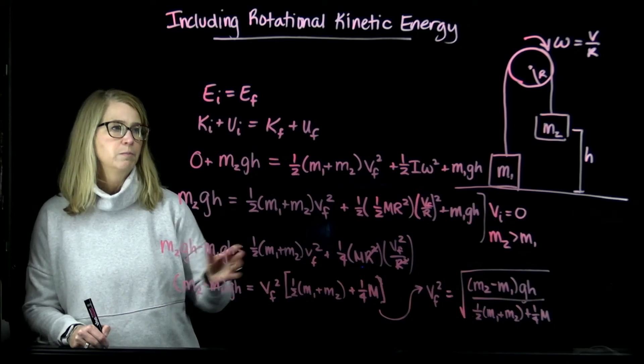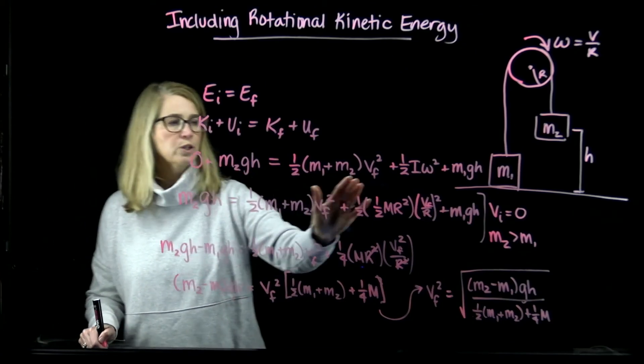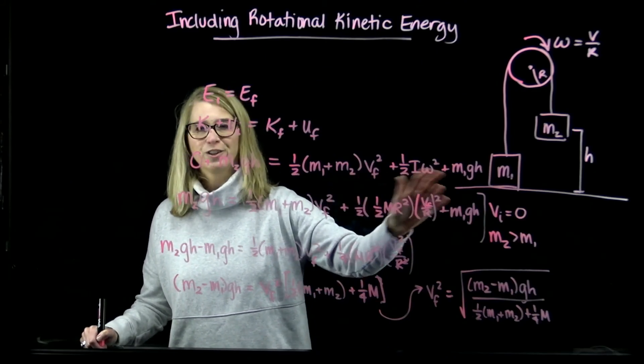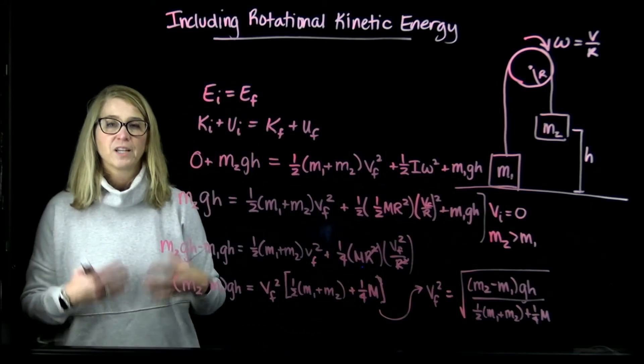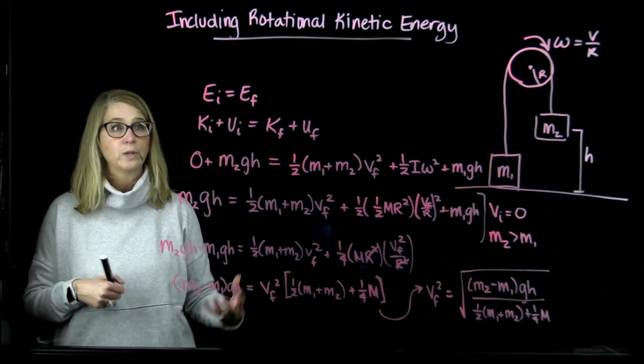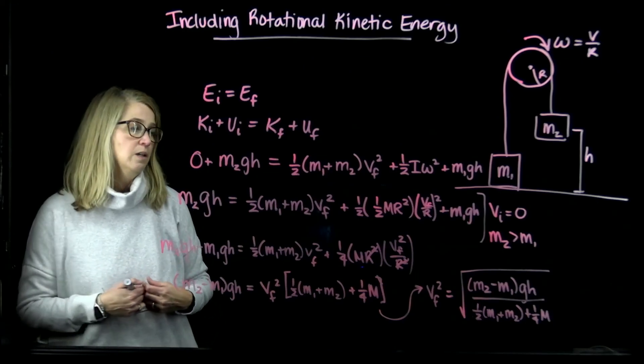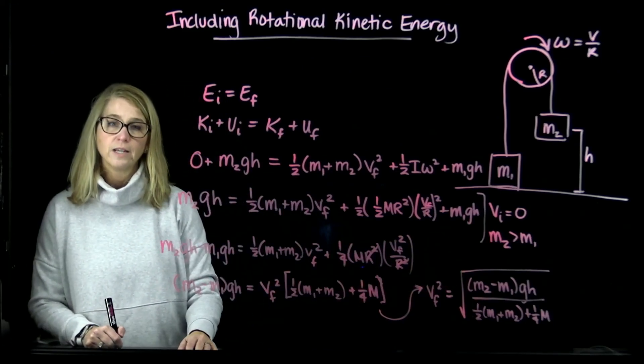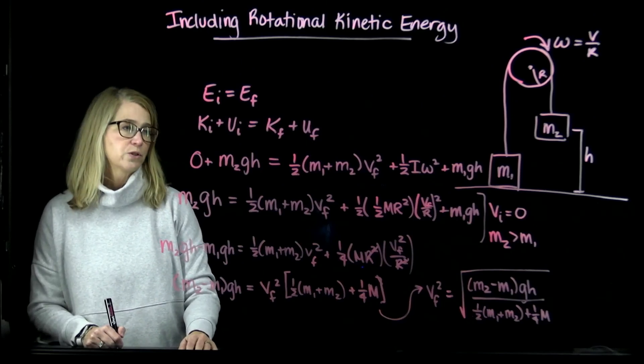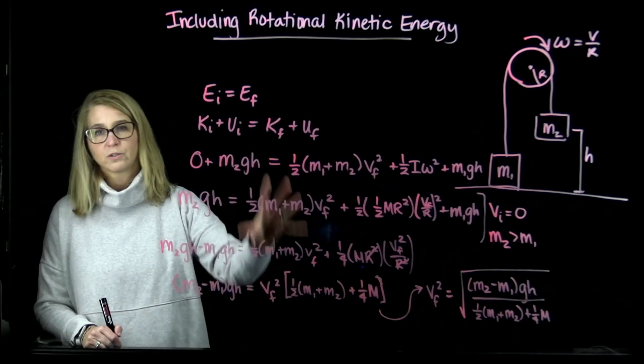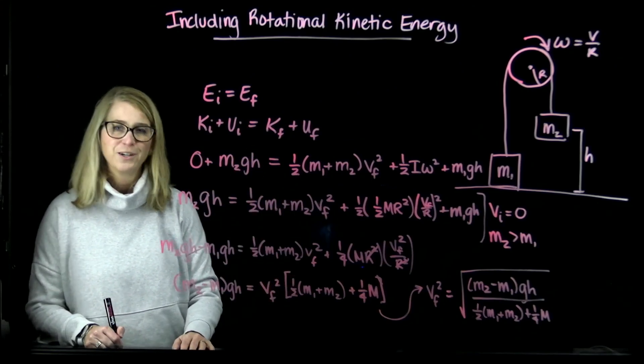Adding the rotational kinetic energy of the pulley basically meant that this initial energy was split up into an extra bucket, and so that means that each of the other buckets get less. In the end, our final speed is not going to be as high as it was when we ignored the pulley. Just thought it'd be good to work through that and to see how we might approach it.